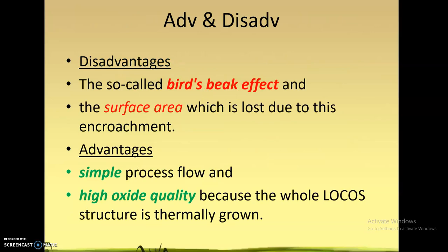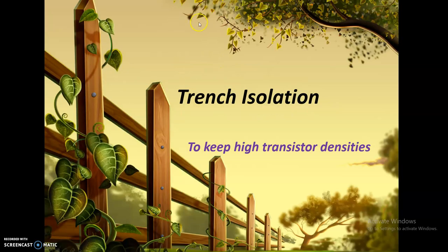The disadvantage of LOCOS is the bird's beak effect and the fact that surface area is lost. The advantage is that the process flow is quite simple and straightforward, and the quality of the oxide grown will be high quality. The next method of isolation is trench isolation, which we will see in the next video.